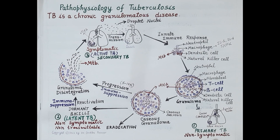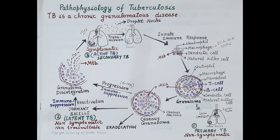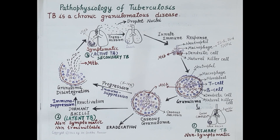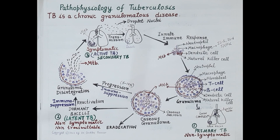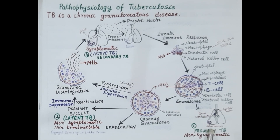TB at this stage is called primary TB. Primary TB is the stage when an individual is infected for the first time, with development of Ghon focus and Ghon complex in the lungs. Primary TB is non-symptomatic and non-infectious — it cannot be transmitted from the infected person to a healthy person because all the bacilli are locked inside the granuloma.